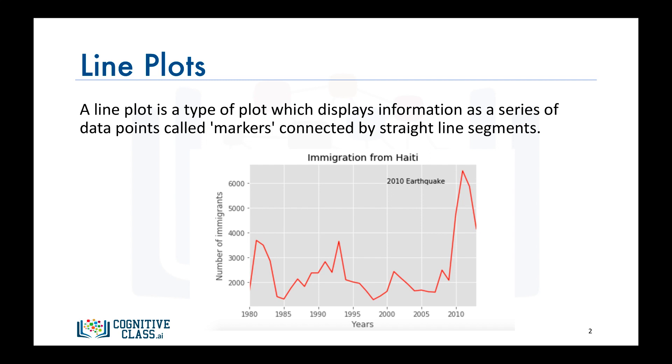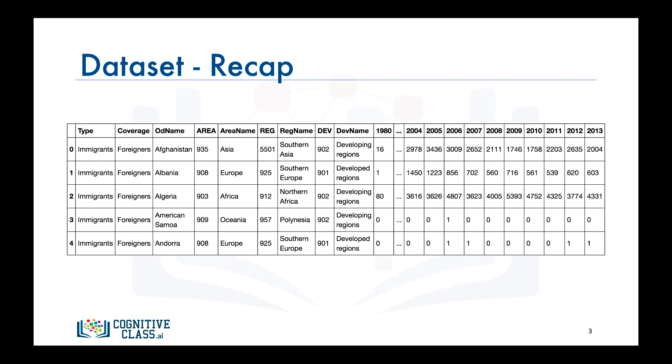Okay, now how can we generate this line plot? Before we go over the code to do that, let's do a quick recap of our dataset. Each row represents a country and contains metadata about the country such as where it is located geographically and whether it is developing or developed. Each row also contains numerical figures of annual immigration from that country to Canada from 1980 to 2013.